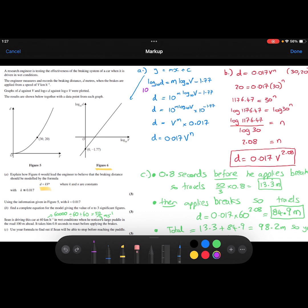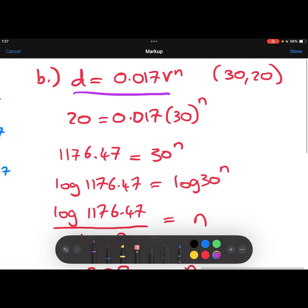Part B then says to use the information in Figure 5 to find a full equation for the model. So I've taken what I've just got from part A, and I'm using the fact that I now know that when V is 30, D is 20. So I've plugged V as 30 and D as 20.